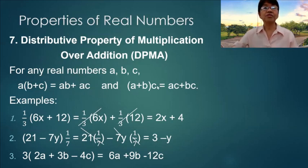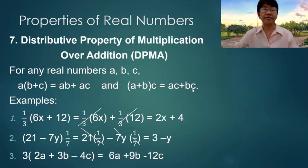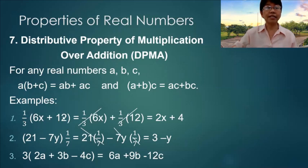Number seven: Distributive Property of Multiplication over Addition. For any real numbers a, b, and c: a times the quantity b plus c is equal to a times b plus a times c. If the multiplier is placed after the parenthesis, we multiply backwards to get ac plus bc. Example one: 1/3 is multiplied into the quantity inside, giving 1/3 times 6x and 1/3 times 12. Cancelling, we get 2x plus 4.